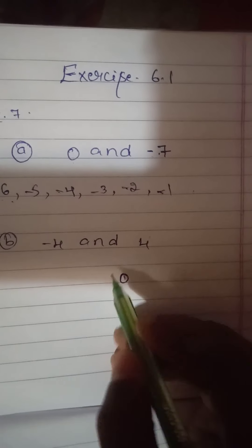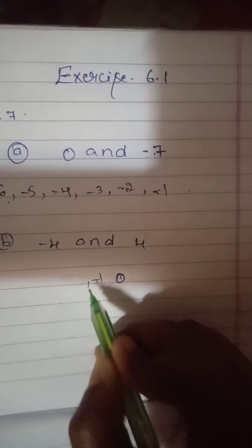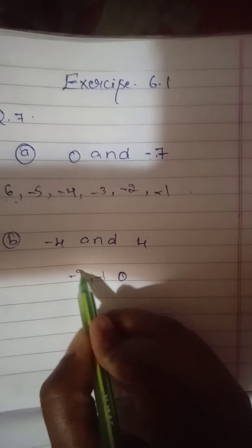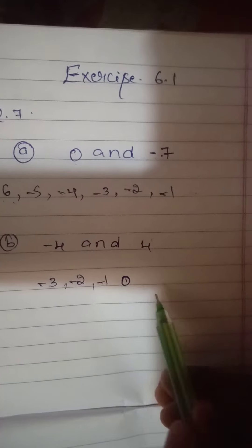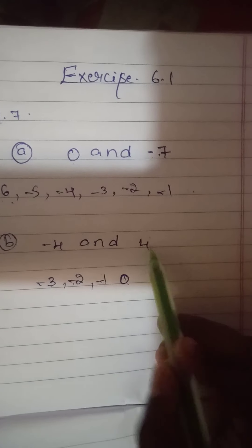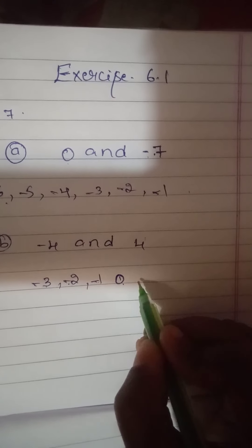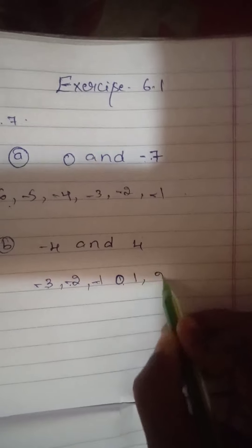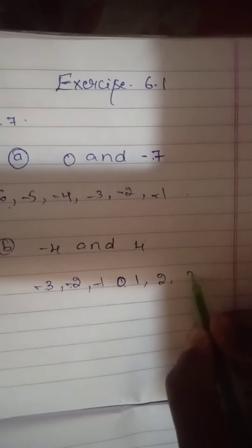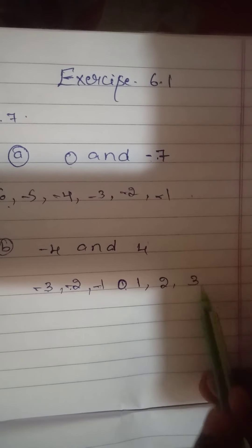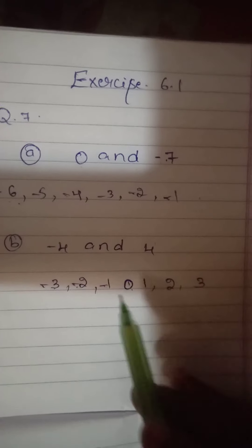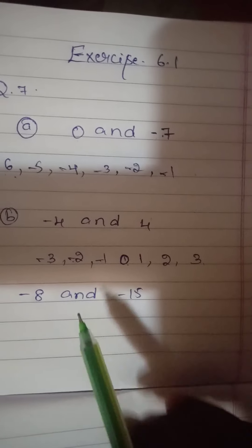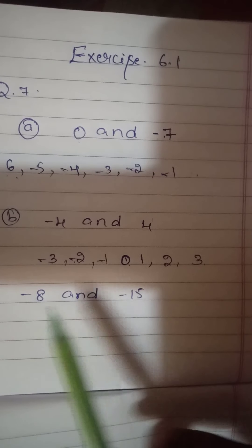The negative integers are minus 1, minus 2, minus 3, and the positive integers are 1, 2, 3. So the integers between minus 4 and 4 in increasing order are: minus 3, minus 2, minus 1, 0, 1, 2, 3. Next is minus 8 and minus 15.